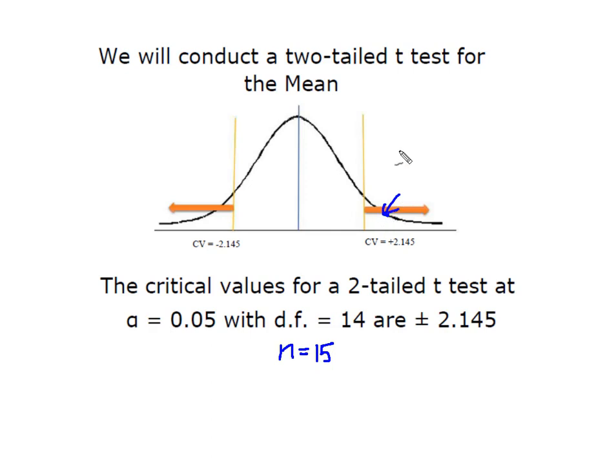I know that my alpha is split in two, and I have 0.025 in the right tail and alpha divided by 2 of 0.025 in the lower tail. This gives me symmetrical critical values of plus and minus 2.145. I pulled these out of a t distribution table.